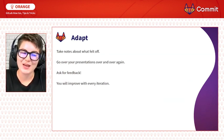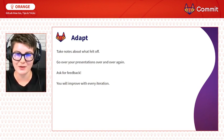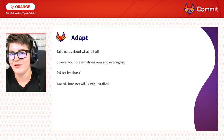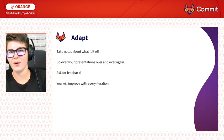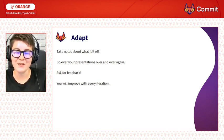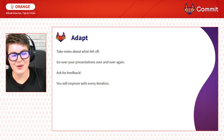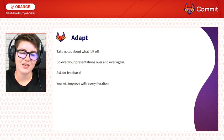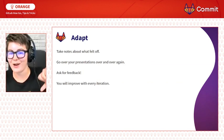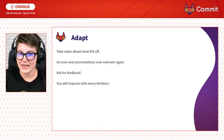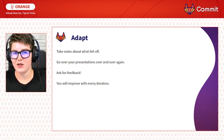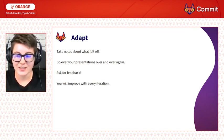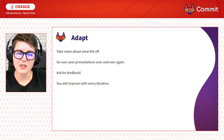The next step is to adapt. Take notes about what fell off in your presentation. If you have a co-trainer or someone helping you, let them write things down. So you can go over your presentation afterwards and correct whatever fell off. Do go over your presentation over and over again anyway. And ask for feedback — not just 'was it good on a scale from one to six,' but let people explain what they liked or didn't like. If there are ten people attending, eight will give feedback and four will actually write something useful. And you will improve with every single iteration.